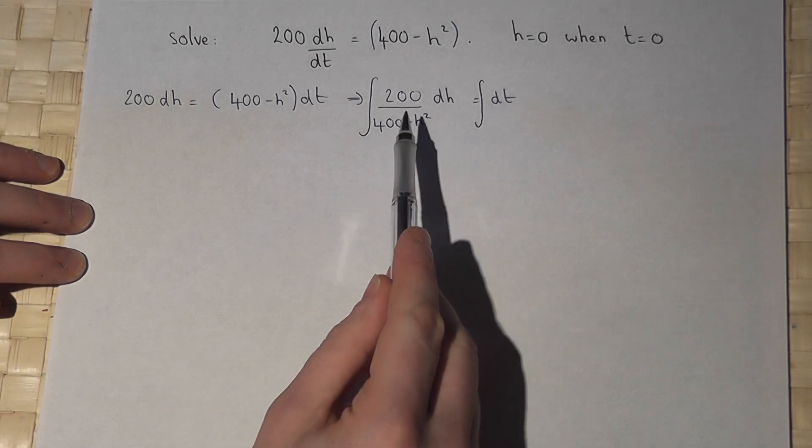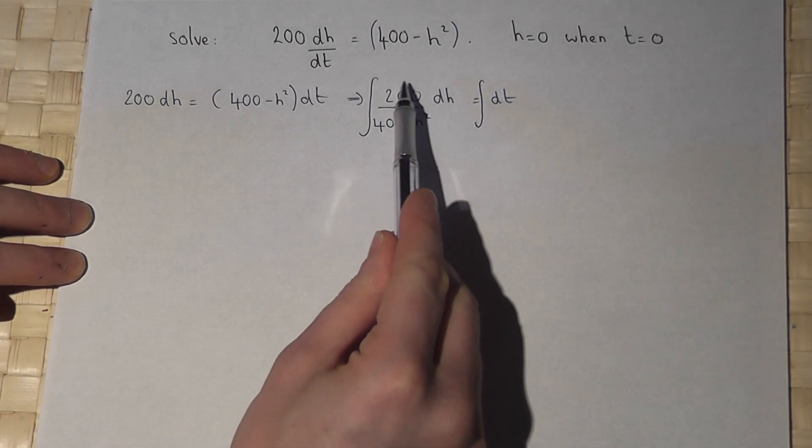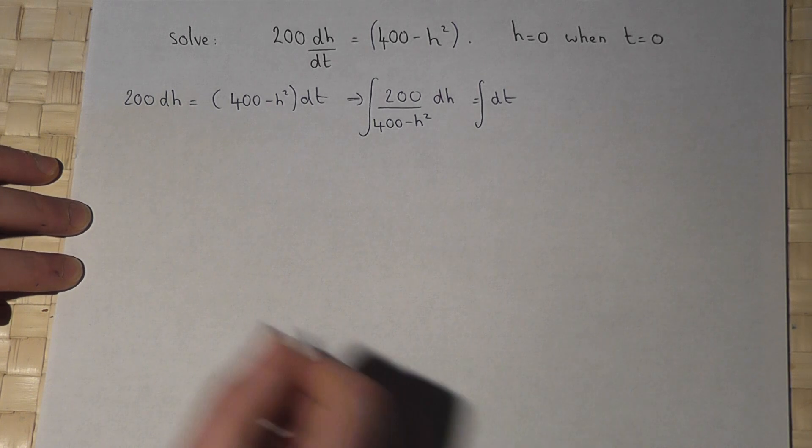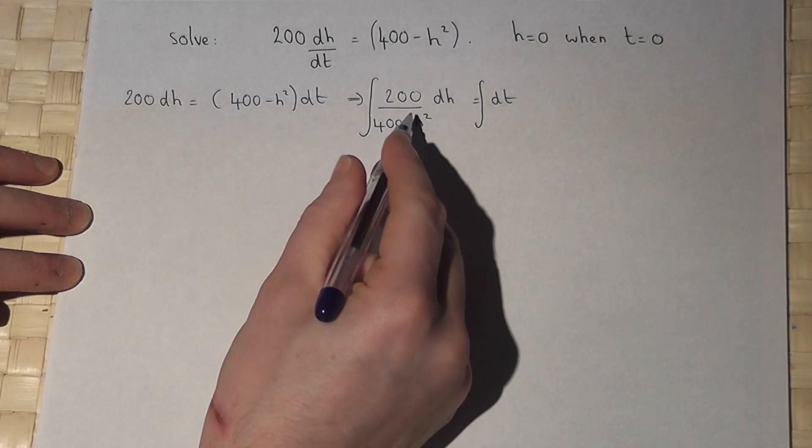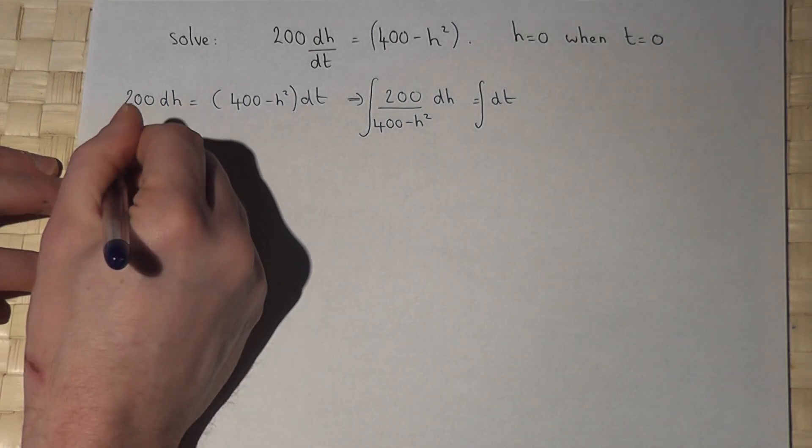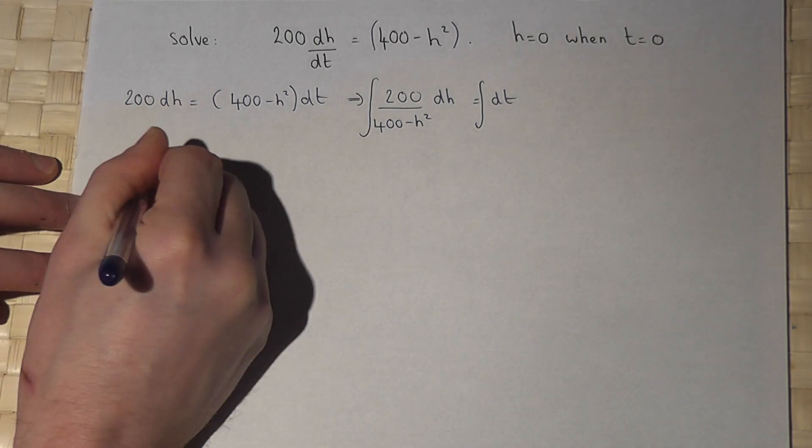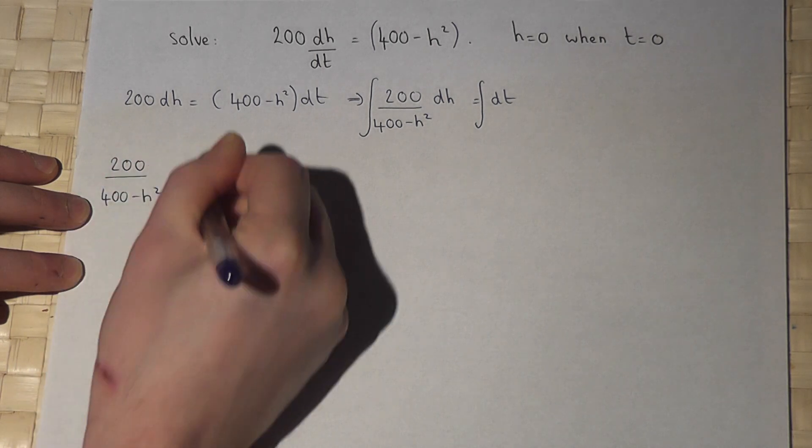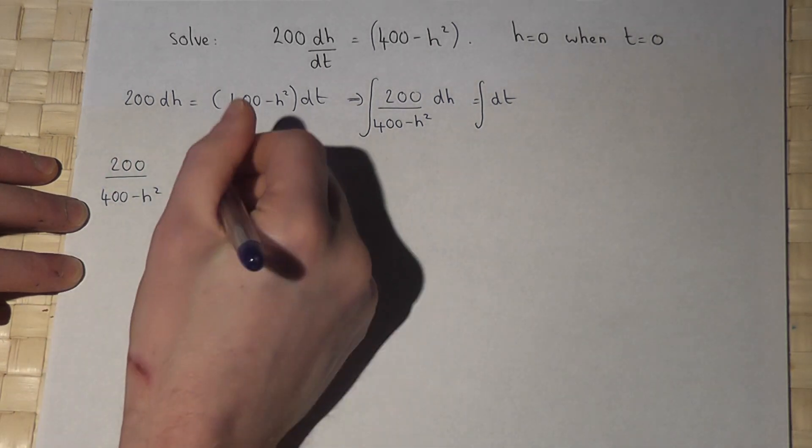To integrate this requires partial fractions. Now I can write 200 over 400 take away h squared in the following way. This is the difference of two squares.